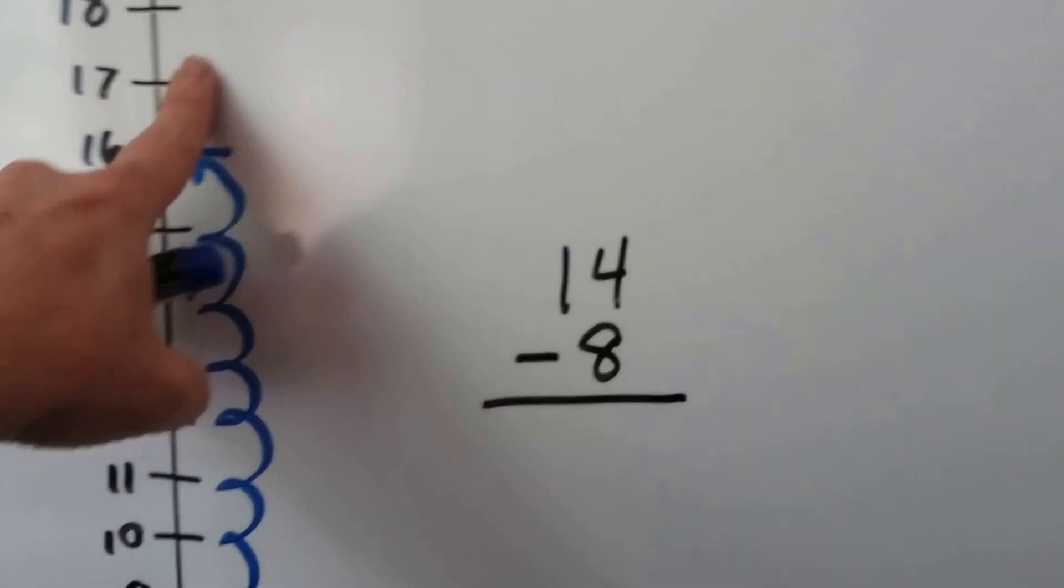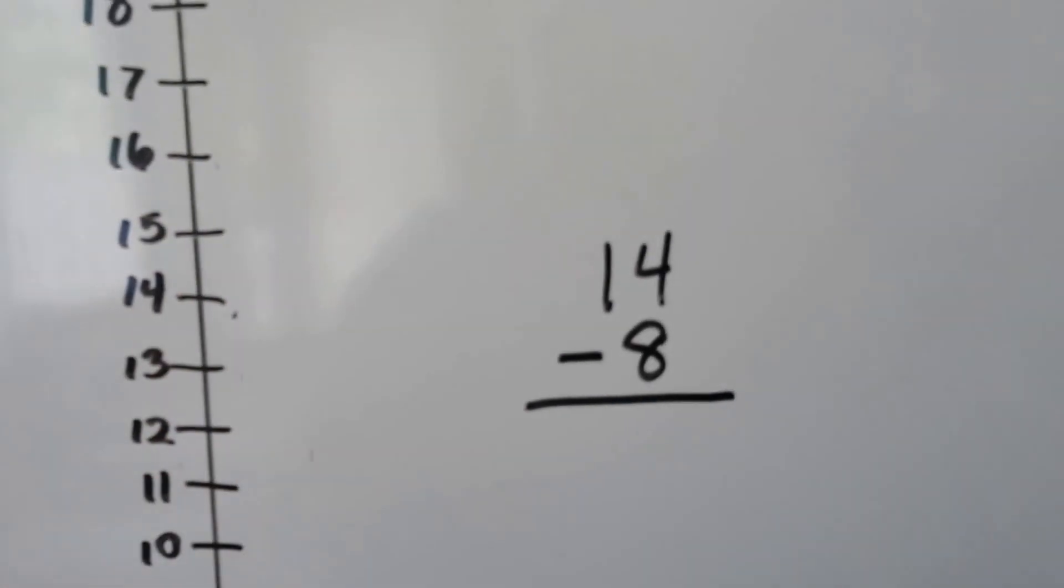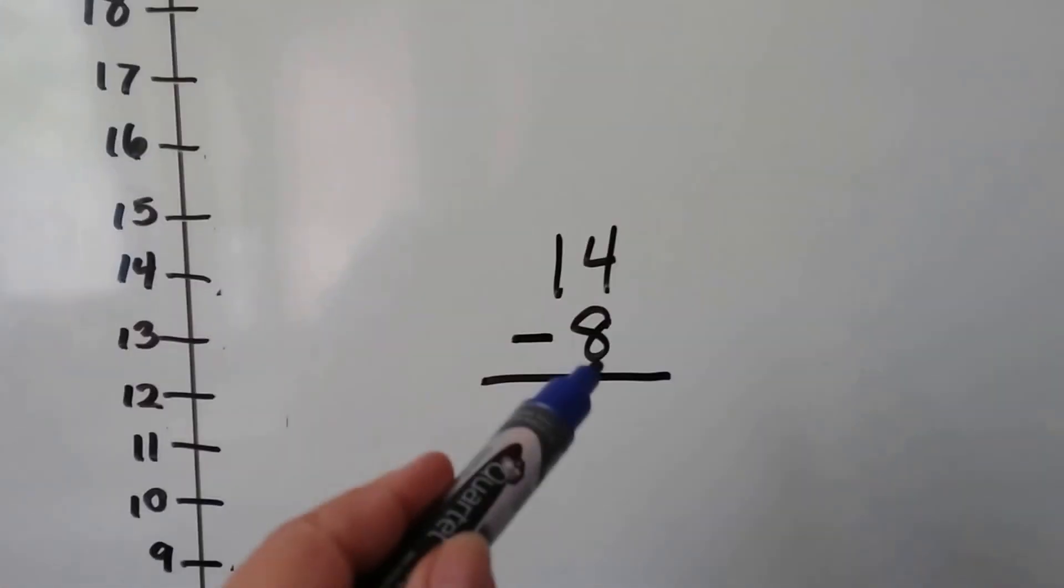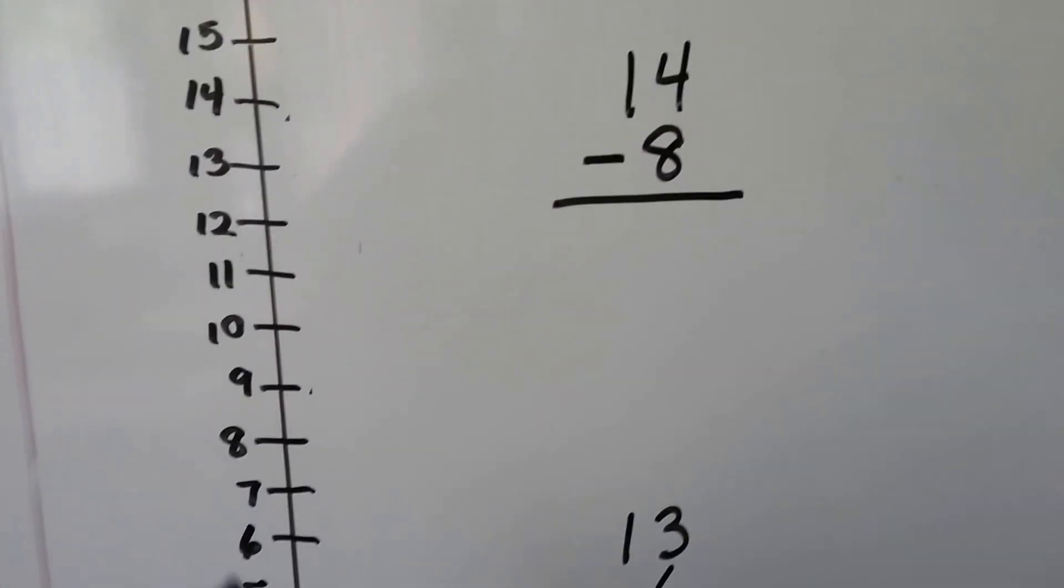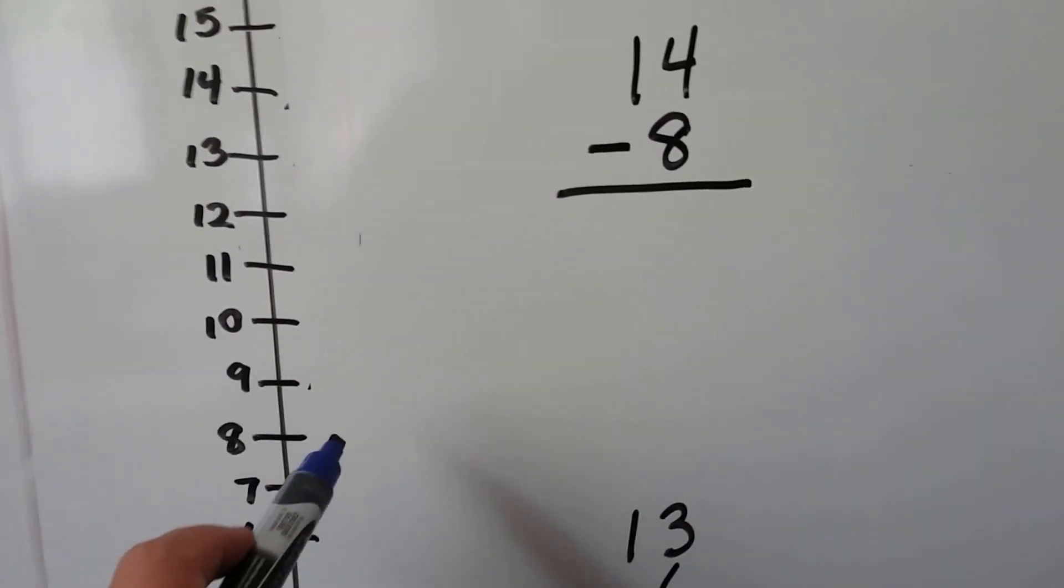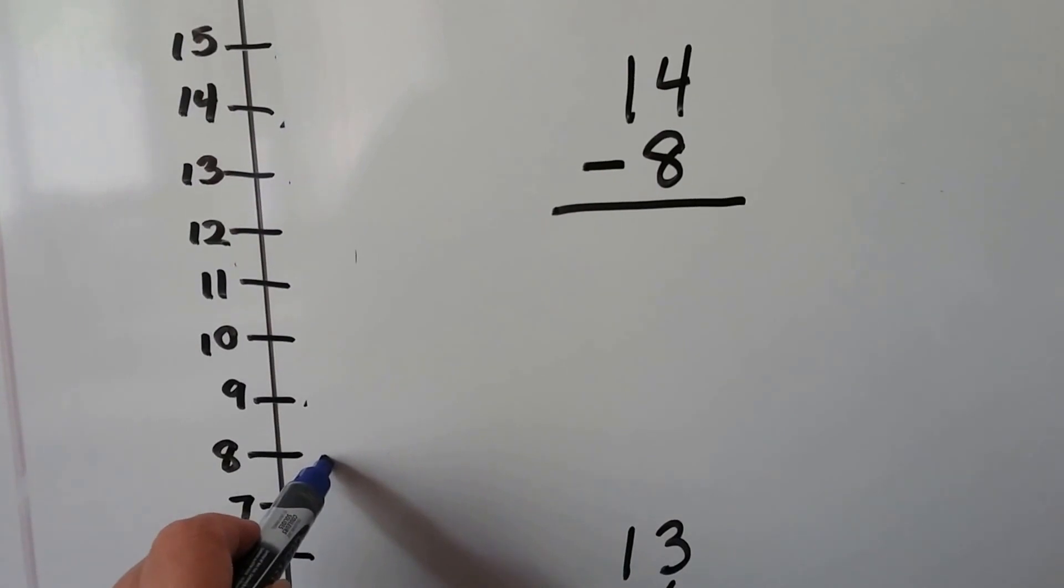We have 14 minus 8. We need to find the 8 on the number line. It's right here. We're going to count up to 14.